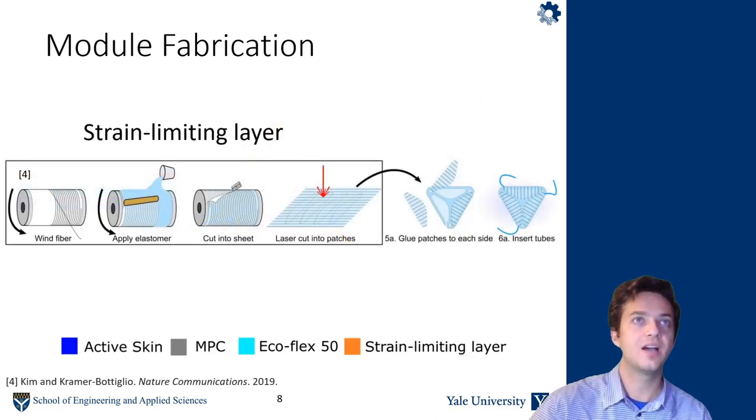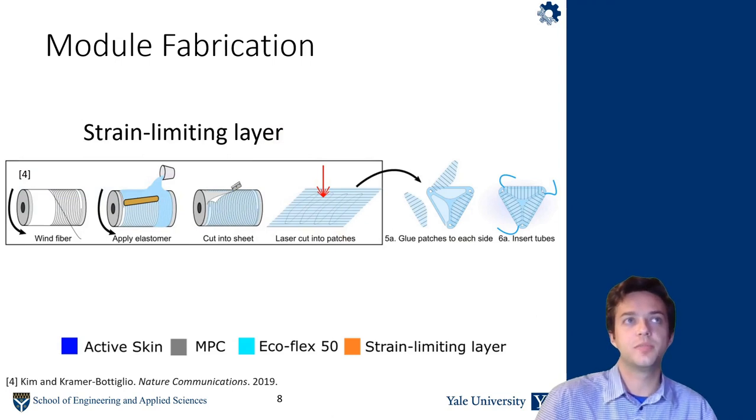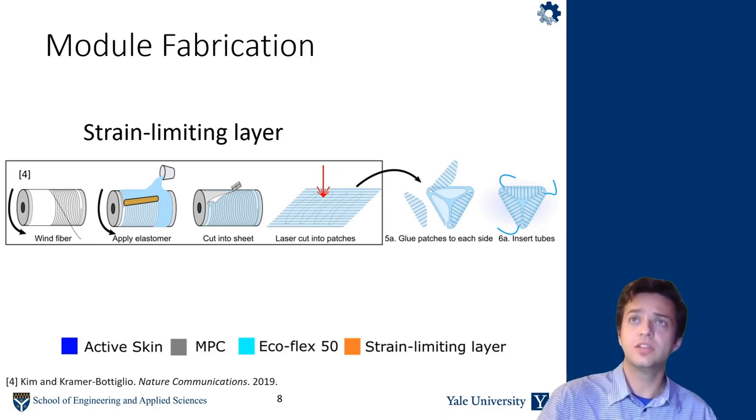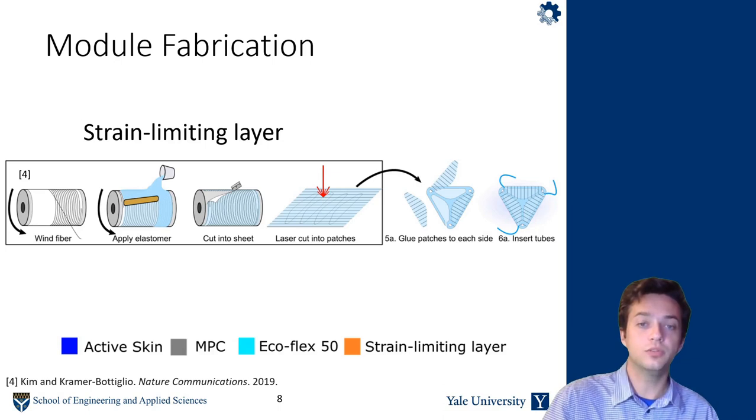So we make the fibers, or we make this composite by winding fibers around a drum, encapsulating it in silicone, and then laser cutting these patches. So they're anisotropic in one direction, you can strain them, and it's just like silicone in the other, it's completely inextensible. So they were originally designed so that the deflection of the actuators can be controlled when they're inflated.